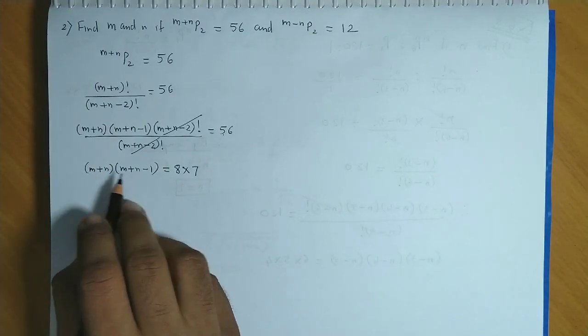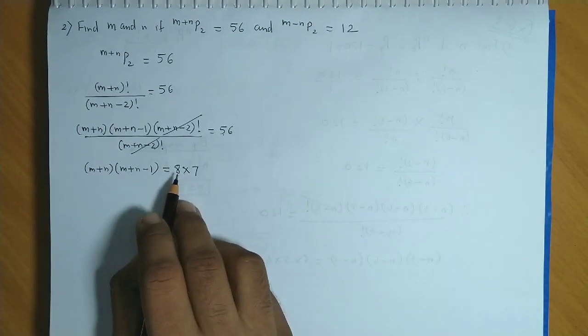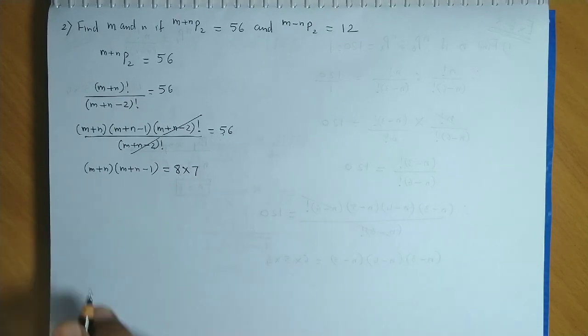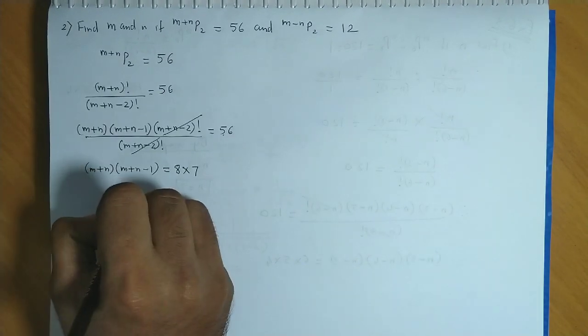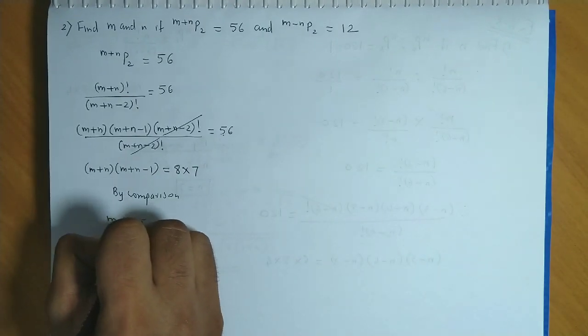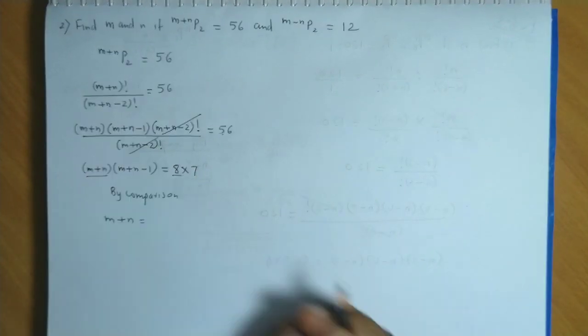Two factors, descending order, difference of 1. Here also we have two factors, descending order and a difference of 1. So therefore we could say, by comparison, m plus n, the first factor would be equal to 8.